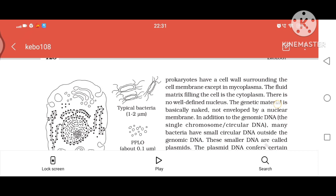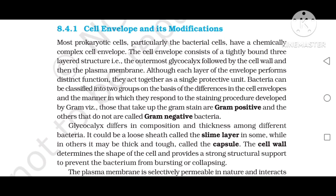Cell envelope and its modifications. Most prokaryotic cells, particularly bacterial cells, have a chemically complex cell envelope. The cell envelope consists of a tightly bound three-layered structure: the outermost glycocalyx, followed by the cell wall, and then the plasma membrane. Although each layer of the envelope performs distinct functions, they act together as a single protective unit. Bacteria can be classified into two groups based on differences in the cell envelope and their response to Gram staining — those that take up the Gram stain are Gram positive, and those that do not are Gram negative bacteria.